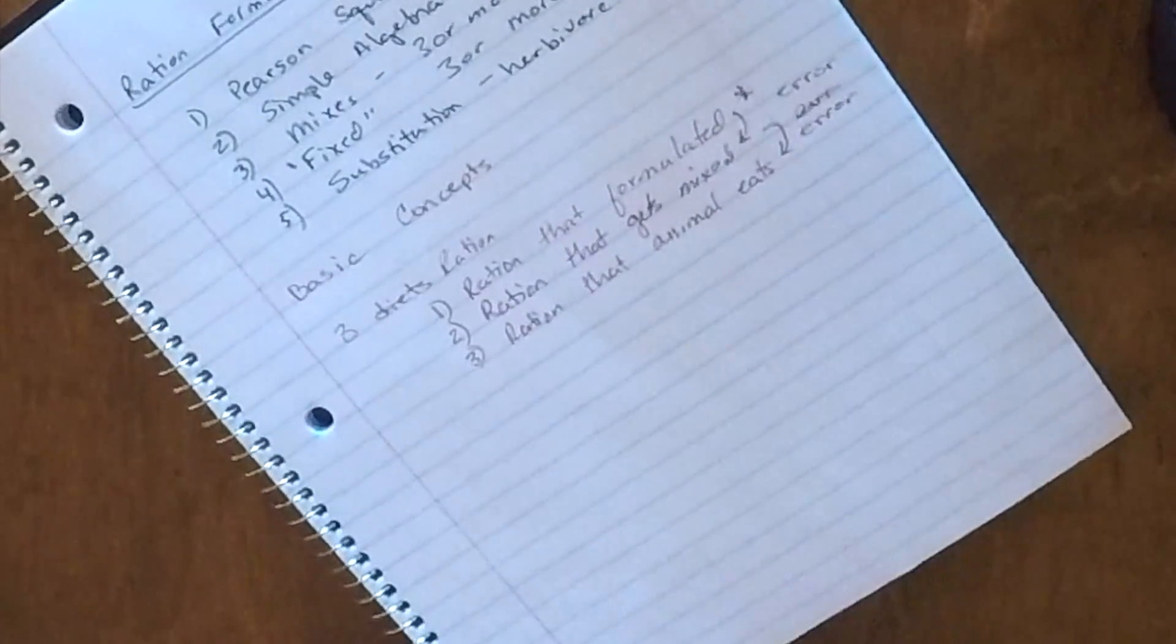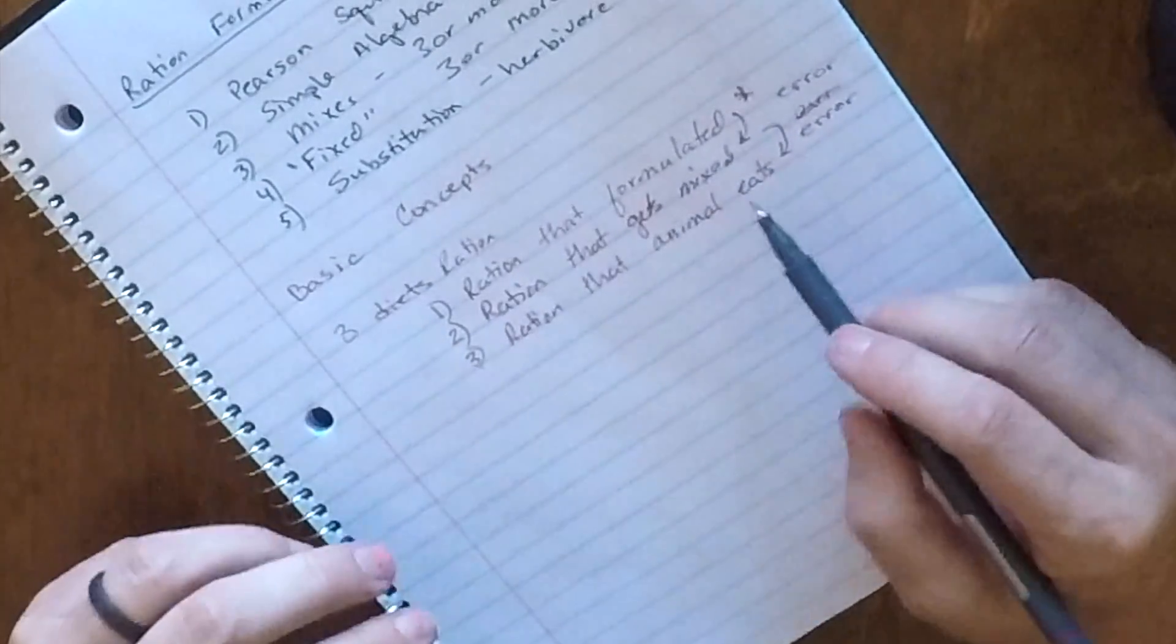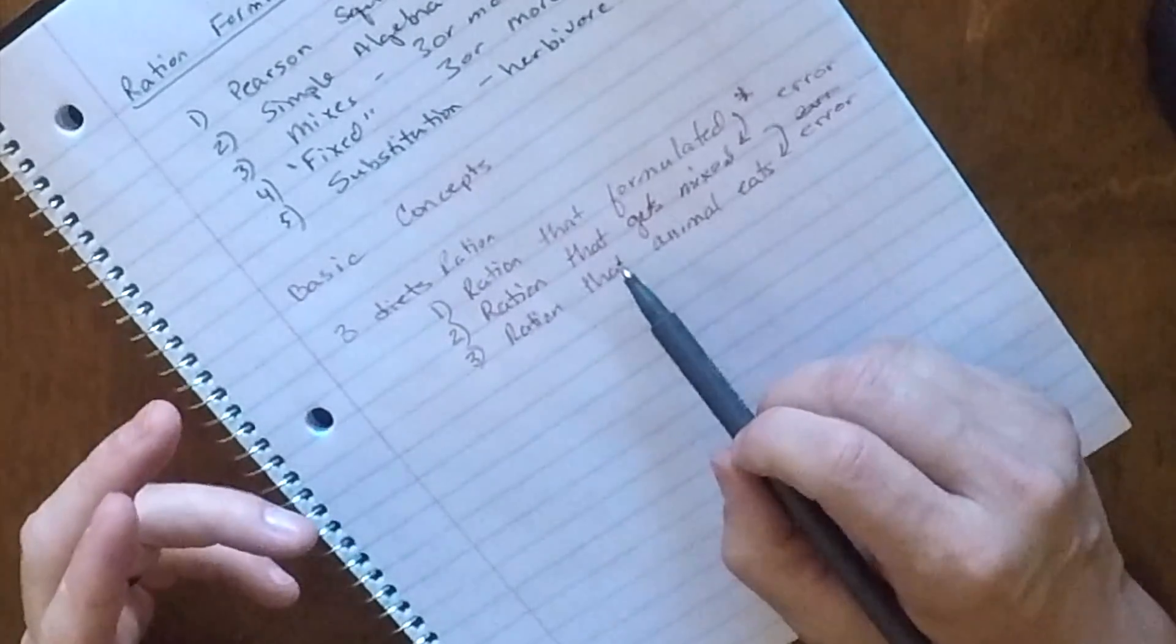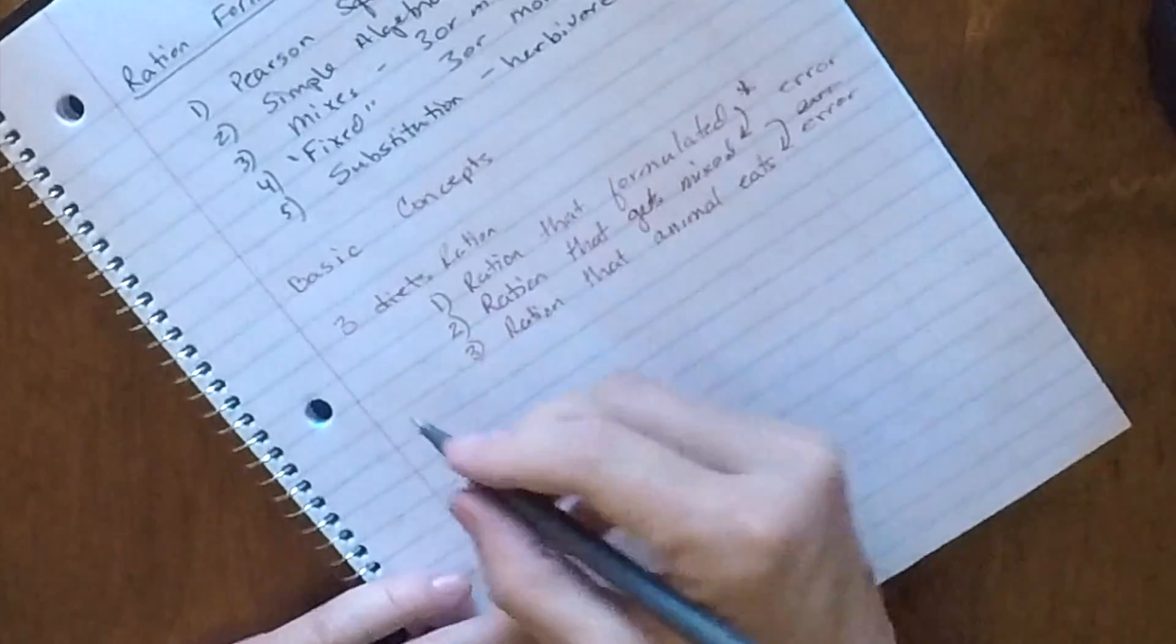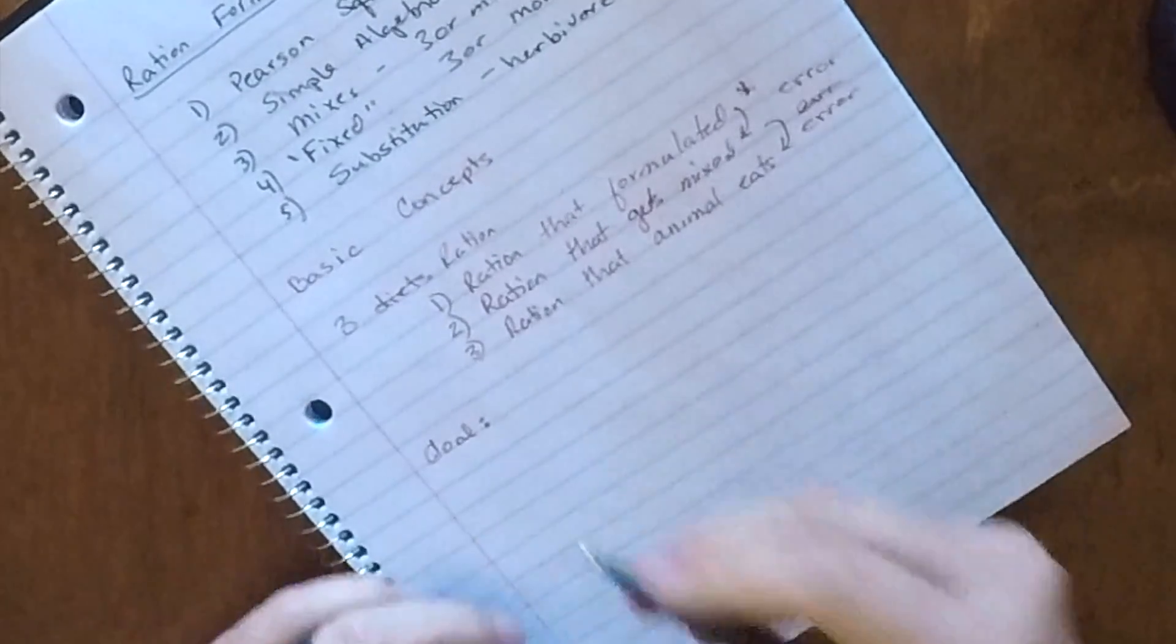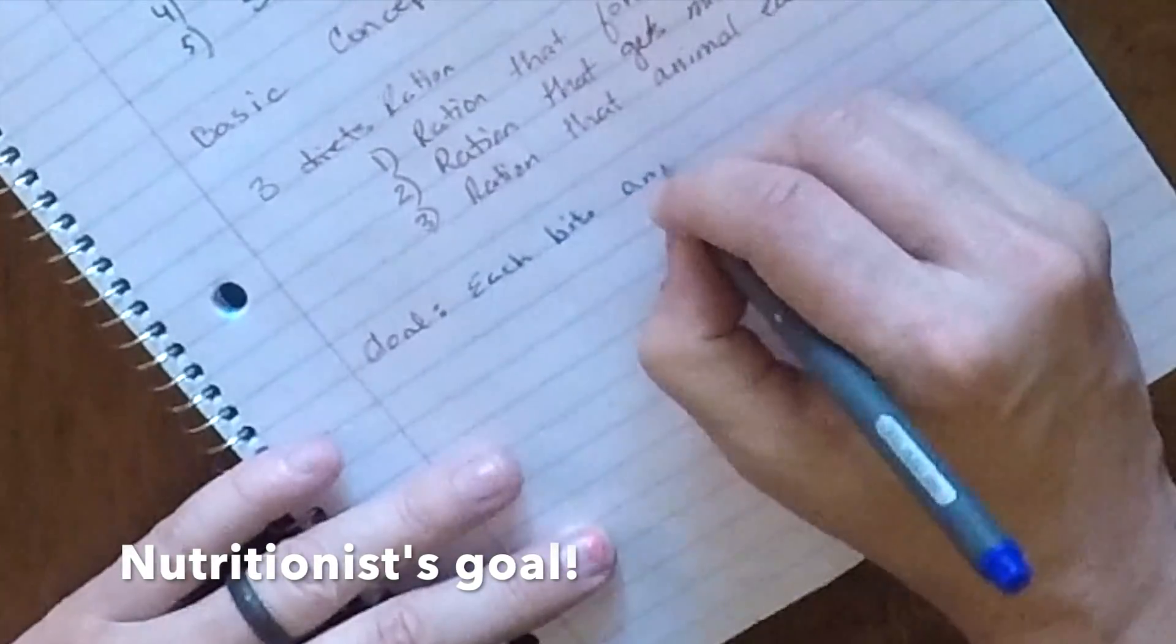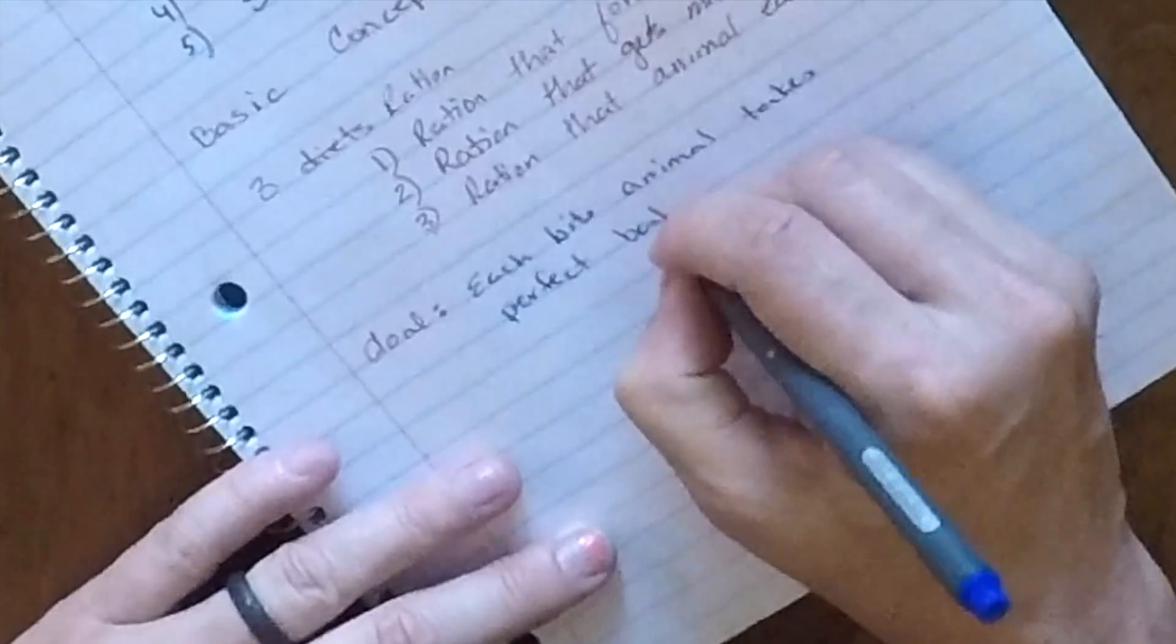And so while in this class, we're going to practice really precise ration formulation, but understanding that we're going to be precise in what we do, but we realize that if we were to give some of these rations to producers, it may not get mixed exactly the same. And then we have to understand that the animal is going to consume elements of it. But our goal as a nutritionist, our goal is that each bite an animal takes is a perfect balance of nutrients.